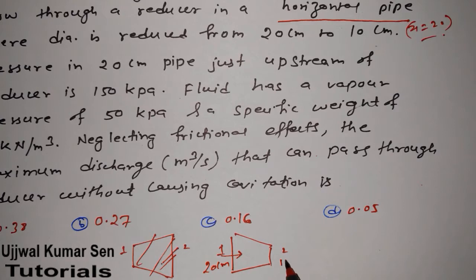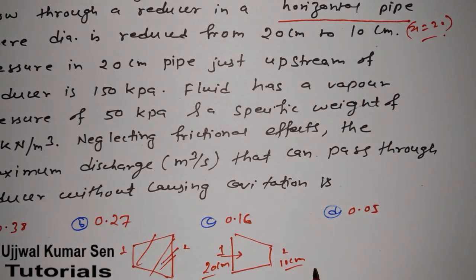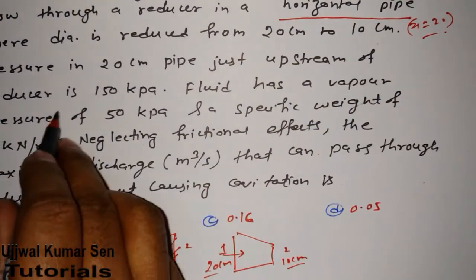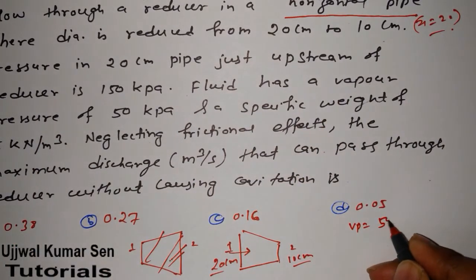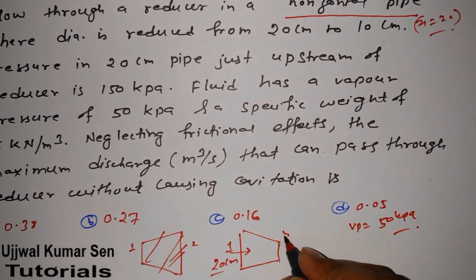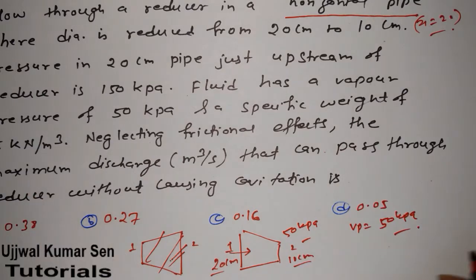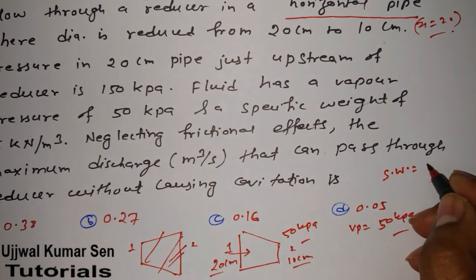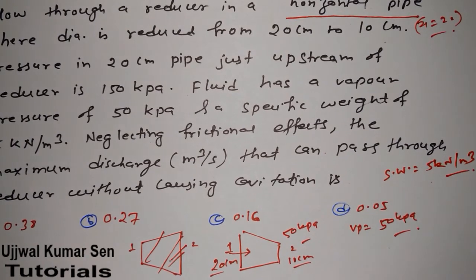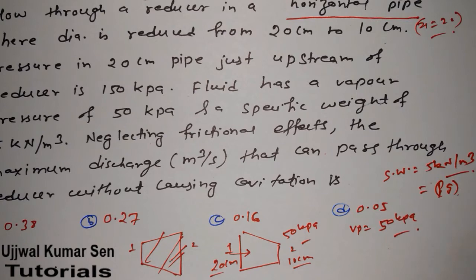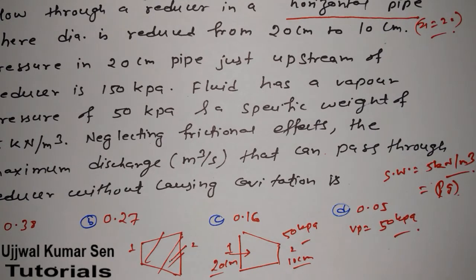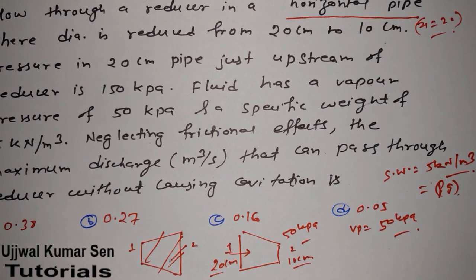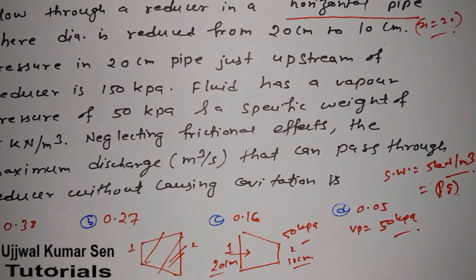The pressure in the 20 cm pipe just upstream of the reducer is 150 kPa. The fluid has a vapor pressure of 50 kPa, and specific weight is 55 kN/m³. Neglecting frictional effects, find the maximum discharge that can pass through the reducer without causing cavitation.